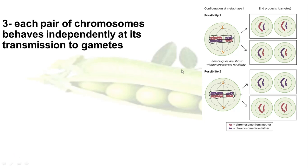For example, if we have this cell — this is a somatic cell that will be divided into gametes. If we say that the red chromosomes are coming from the mother and the blue ones are coming from the father, what happens during meiosis is that some chromosomes coming from the mother go to one cell with some chromosomes coming from the father, or the other way around, or all chromosomes from the father come together and all chromosomes from the mother come together.